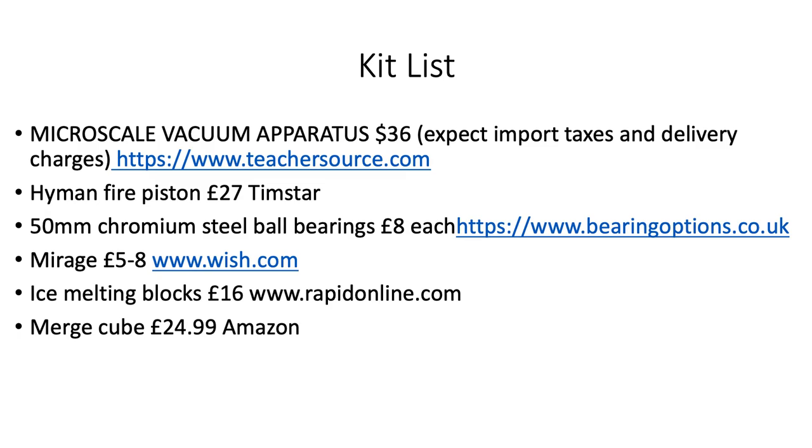The Mirage, or the Mirrorscope, is between £5 and £8. You could buy them in Tesco's at one time. I think you can buy them on Amazon. I have given you the Wish website here. The Melting Blocks from Rapid, £16. There may be other suppliers. I don't know. And the Merge Cube, Amazon, £25. Again, there are other places you can buy that from, but I just wanted to give you an example of where to buy it from.